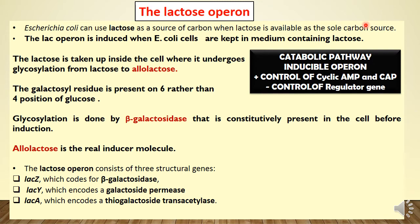Lactose, when taken up inside the cell, undergoes transglycosylation with the help of beta-galactosidase enzyme and is converted to allolactose. The difference is that the galactoside residue is in the 6th position rather than the 4th. Lactose cannot bind to the repressor protein — only allolactose can bind to the repressor. When allolactose binds to the repressor, the repressor molecule is removed from the operator site, and transcription of the structural gene takes place. So the real inducer molecule is allolactose.